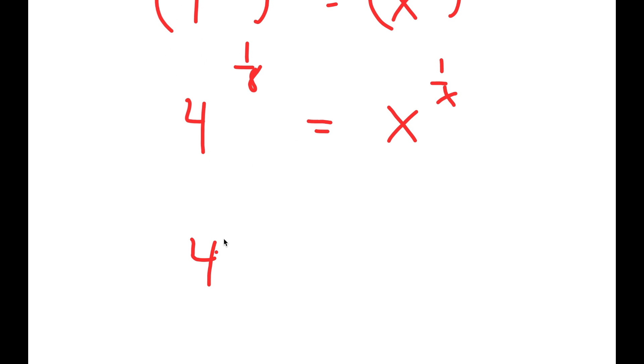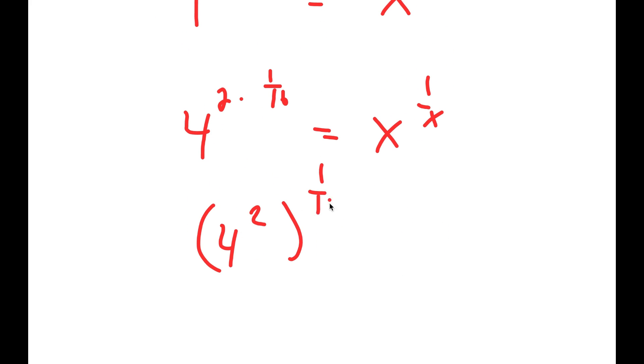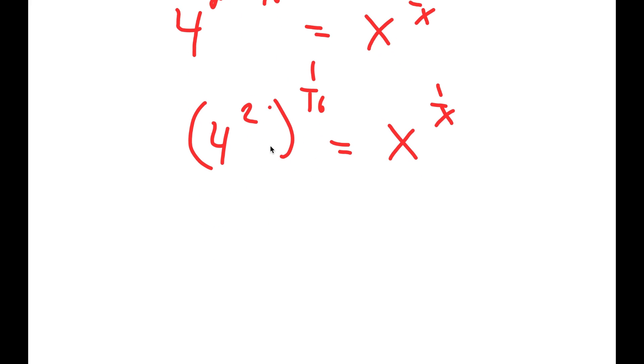Now, this is the same thing as 4 to the power of 2 times 1 over 16. And I can rewrite this as 4 squared to the power of 1 over 16 is equal to x to the power of 1 over x, and 4 squared is 16.